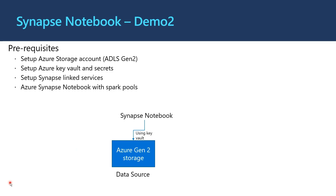Let's talk about Demo 2. In this demo we're going to talk about how to use Azure Key Vault as part of your Synapse notebook. The use case is: I have set up a sample Synapse notebook which is reading a file from Data Lake Storage. The Synapse notebook accesses the Data Lake Storage using storage account keys stored in Azure Key Vault. Since I already set up the Azure Key Vault and linked services in Demo 1, I'll use the same ones here.